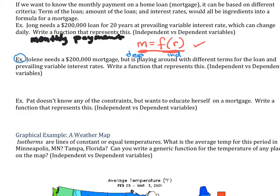Let's move on to the next example with Jolene. With Jolene, now she needs a $200,000 mortgage, but is playing around with different terms for the loan. So she might be doing 30 years or 20 years. It's better to do something that you're comfortable with and maybe pay it off early rather than get into trouble by doing a really short-term loan that will stress you out. Write a function that represents this, the monthly payment again. So now the monthly payment is equal to some function, and then we're going to have two variables that this is working with. One is going to be the interest rate, and then the other one is going to be the term of the mortgage.